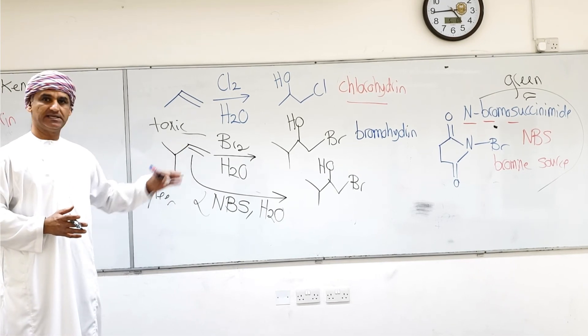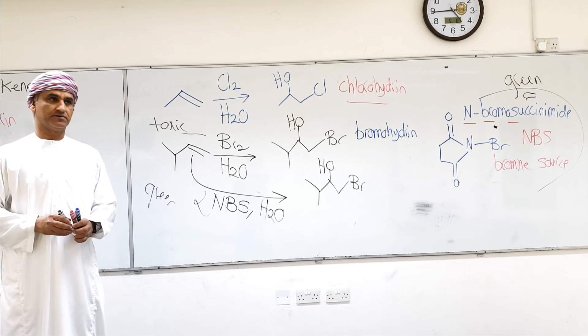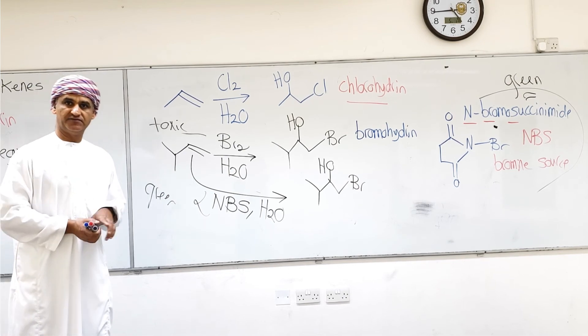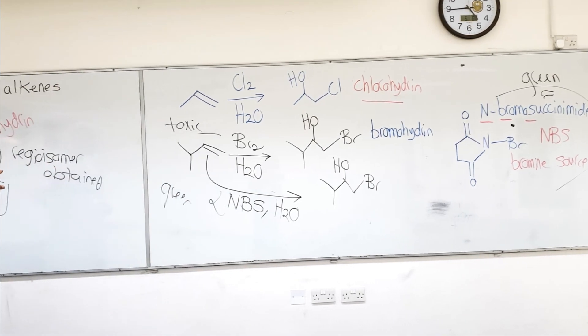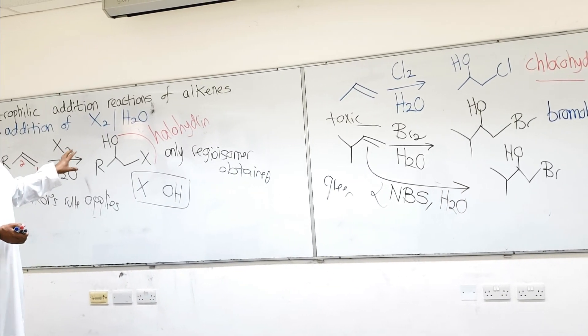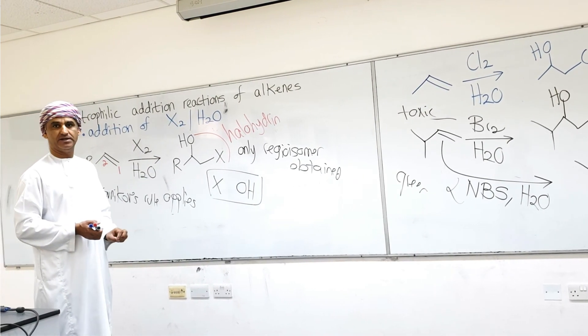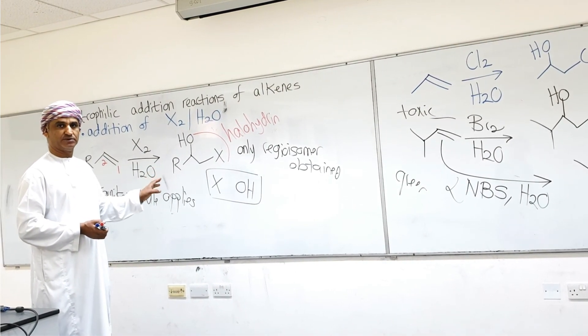And, of course, maintaining the highest efficiency possible. So, the conclusion is, halo hydrin formation, in this case, is possible. If the alkene reacts with the halogen and water, X will bond to carbon-1, and OH will bond to carbon-2.